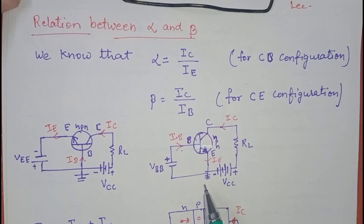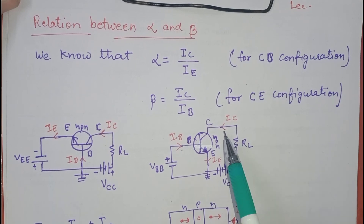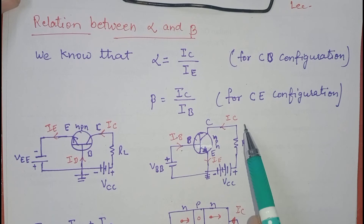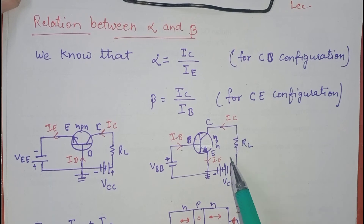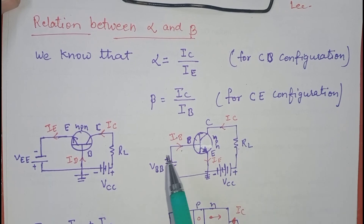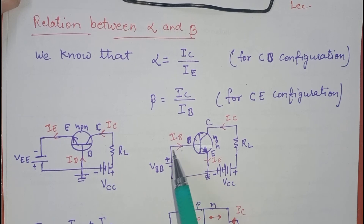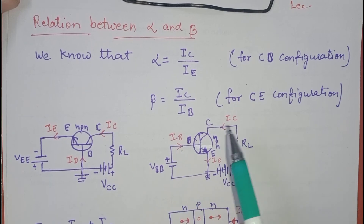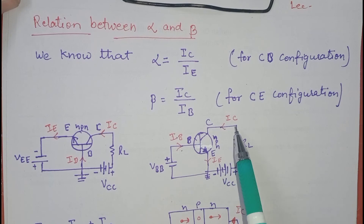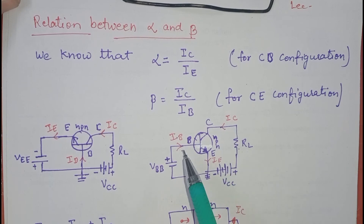This is the circuit diagram of the common emitter configuration. Here IC is the output current, because we are taking output across RL, and IB is the input current because we are giving input on this side. So beta equals IC upon IB.